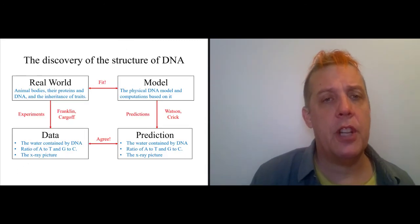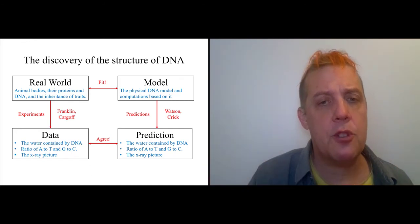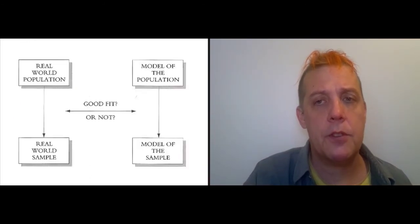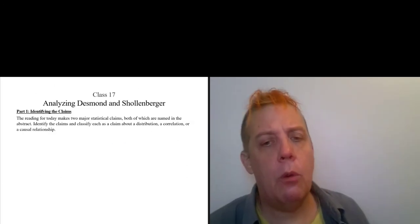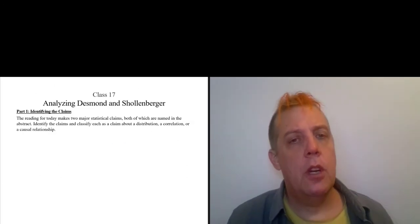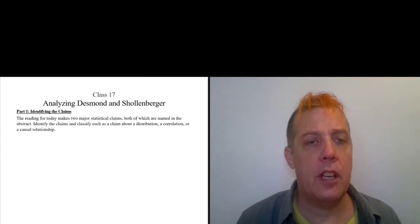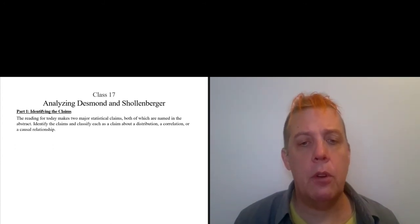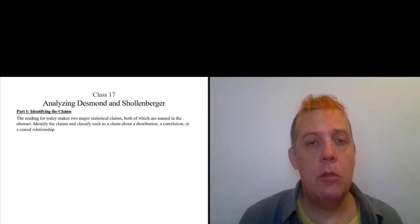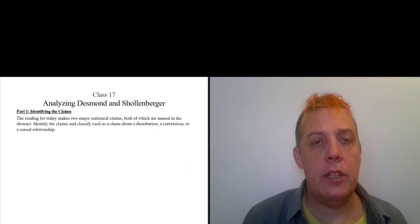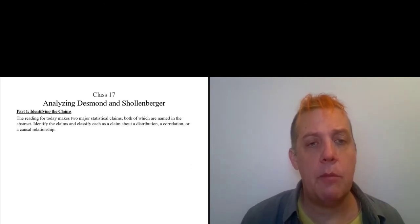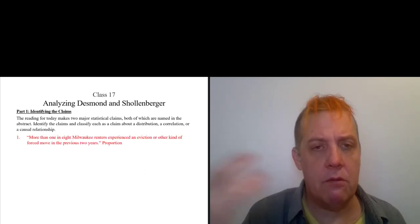This is the chart that Girey produces. This is the version of it just for the structure of DNA. We don't need to review all of this. What I want to do now is actually just look at the exercise on analyzing Desmond and Schillenberger. The first thing I ask you to do is identify the two major statistical claims and identify these claims as a distribution, correlation, or causal relationship.